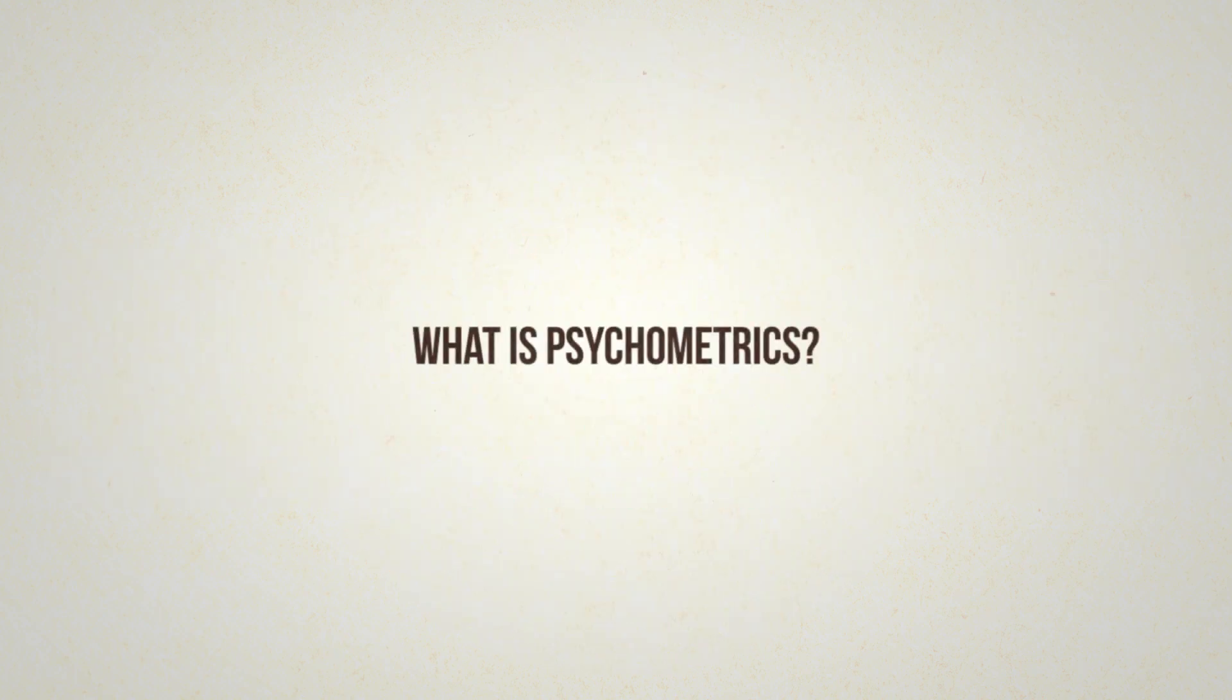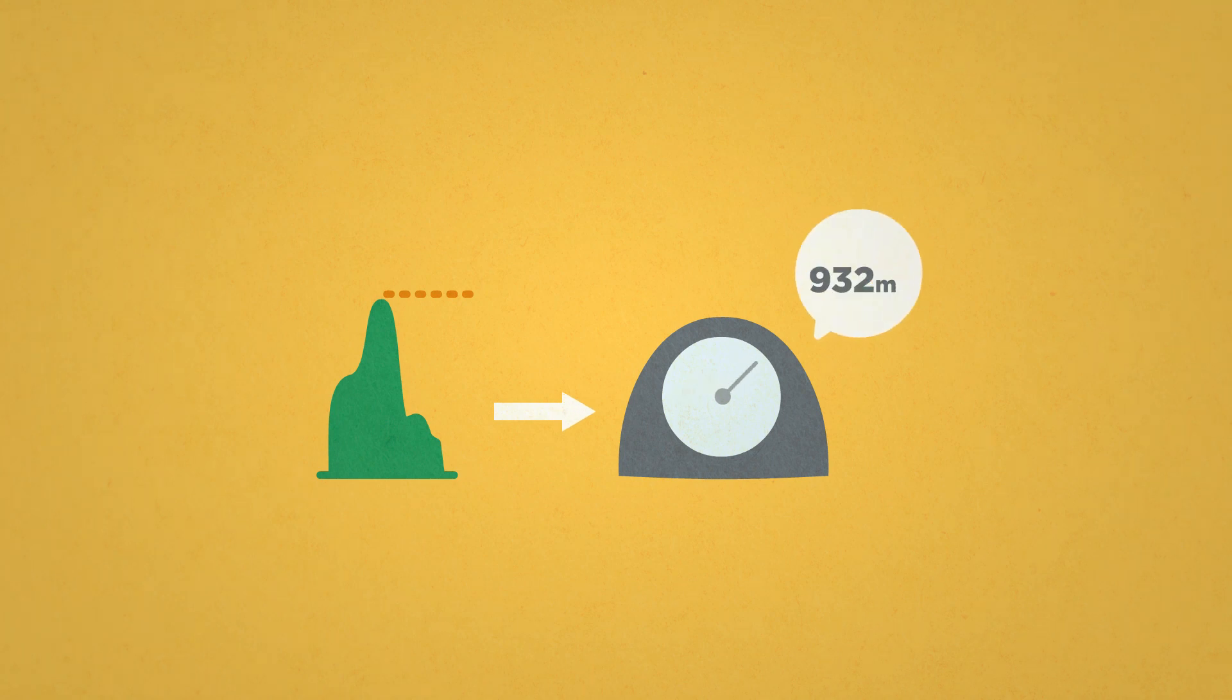What is psychometrics? We can use an altimeter to accurately determine height above sea level, and a barometer to determine atmospheric pressure.